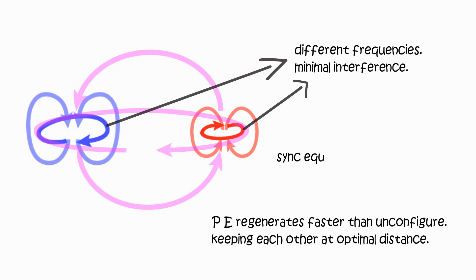Proton-electron's synch-equilibrium is stronger than interference, repelling just the right amount. Thus proton-electron can join perfectly.